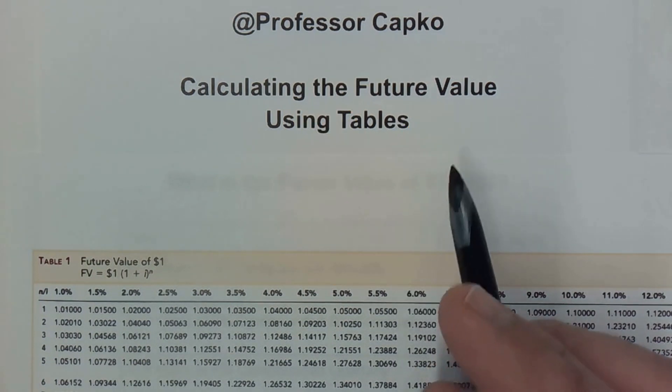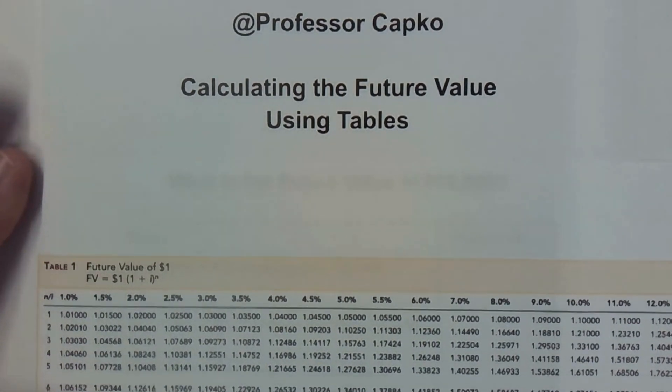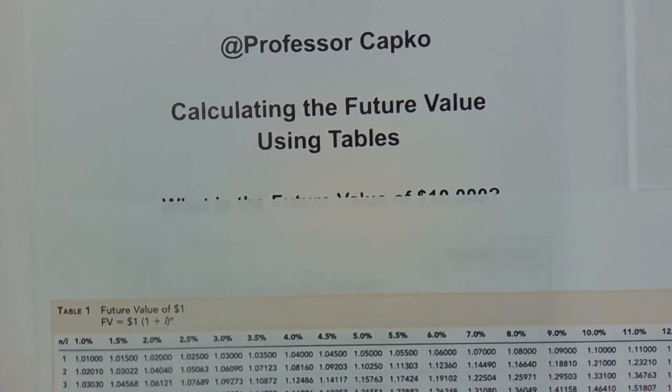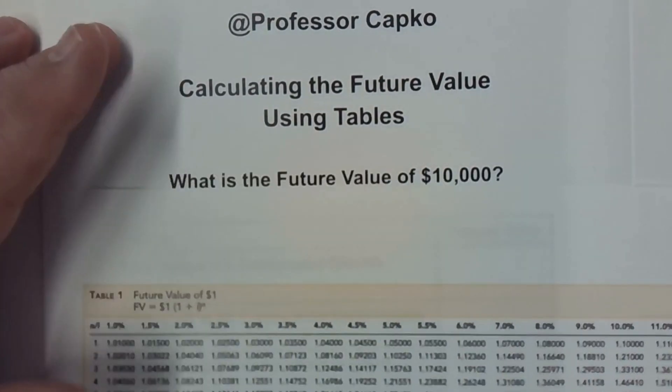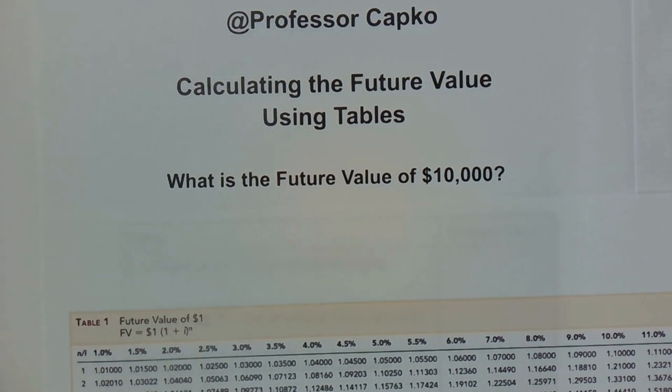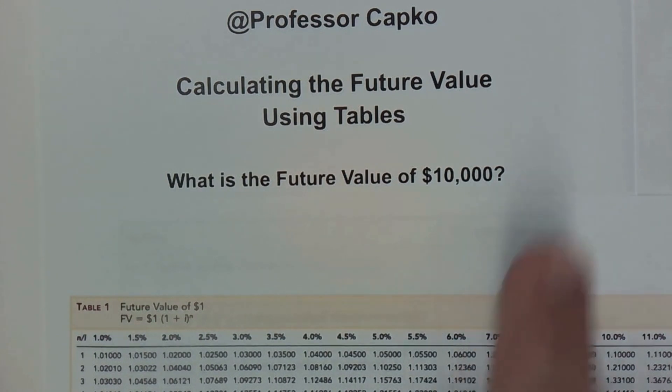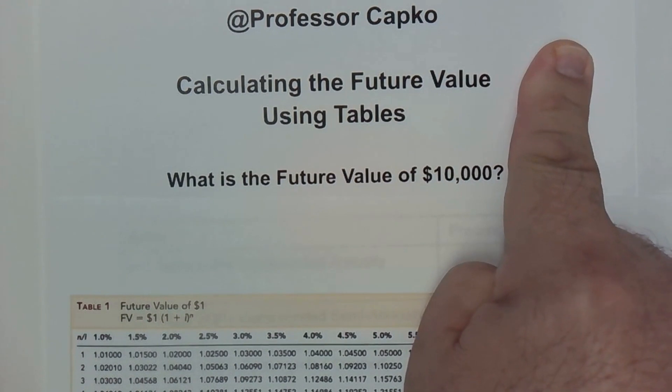All right, let's talk about finding the future value of a certain amount of money. In this case, I'm going to use $10,000 as the amount. I did a prior video where I found the present value of a certain amount of money. If you need to know how to do the present value using tables, I've linked that video up here.